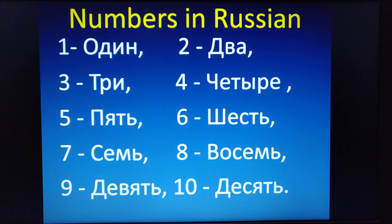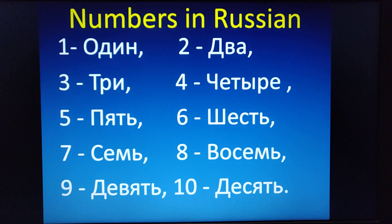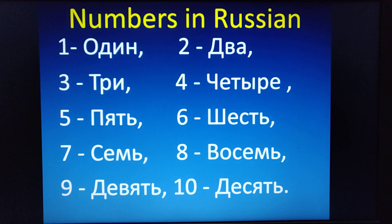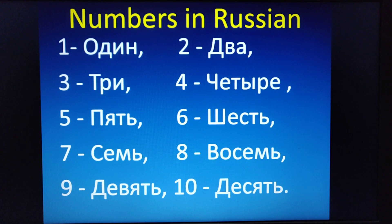The numbers in Russian are like this. Please pay attention to the pronunciation. One is Ajin. Two is Dwa. Three is Tri. Four is Chathiri. Five is Pyaach. Six is Shest. Seven is Same. Eight is Vosem. Nine is Javich. And ten is Jash.